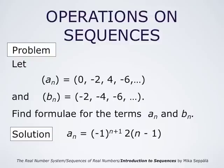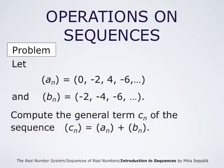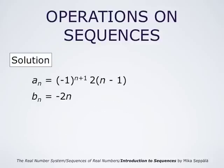Likewise, the numbers bₙ are negative even numbers, so they are of the form -2n. These are now the simplest expressions defining the sequences aₙ and bₙ. So aₙ is 0, -2, 4, -6, … and bₙ is -2, -4, -6, … and so forth. Our task is to compute the general term cₙ of the sequence aₙ + bₙ. Since we have found expressions for aₙ and bₙ, cₙ is simply the sum of these two expressions: cₙ = (-1)^(n+1) × 2(n-1) − 2n.